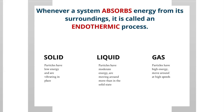Whenever a system absorbs energy from its surroundings, it's called an endothermic process. A solid turning into a liquid absorbs energy — we call that melting, and it is endothermic. Similarly, a liquid absorbing energy and turning into a gas is evaporation — also endothermic. The system must absorb energy in order to speed up the movement of particles to change from a solid to a liquid to a gas.